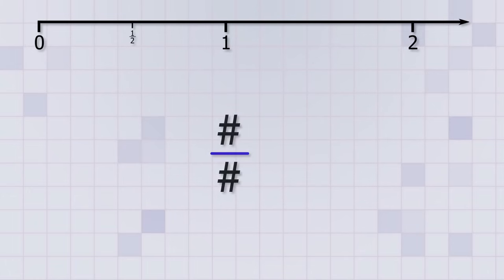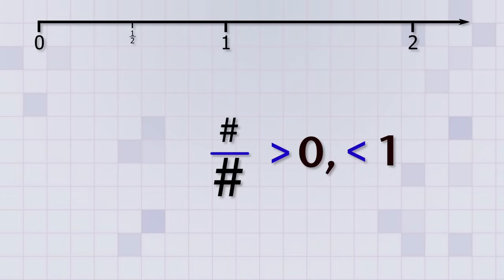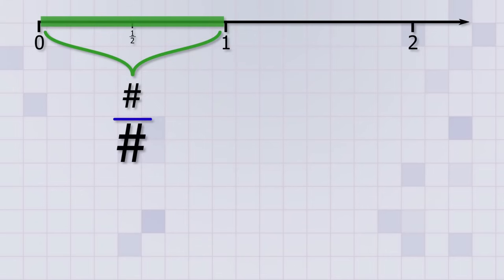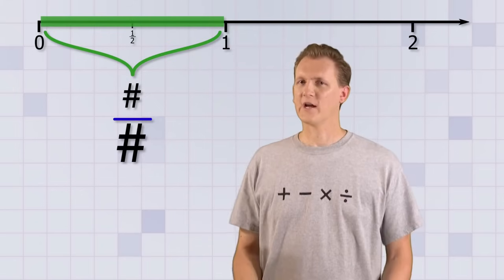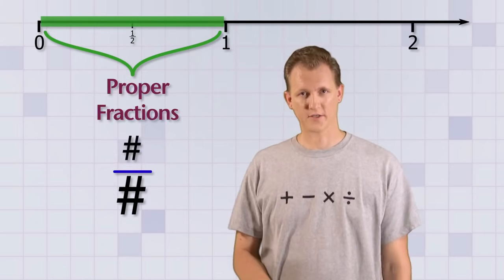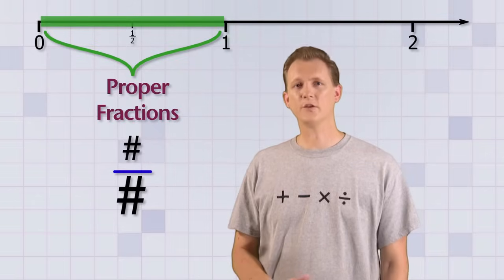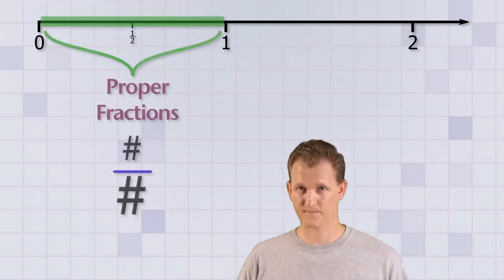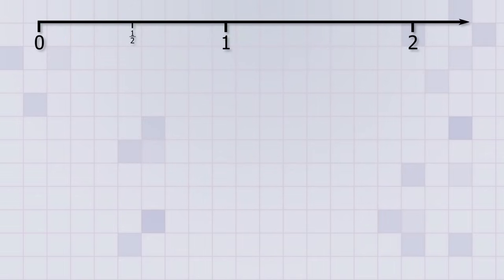The next rule is this: if the bottom number is bigger than the top number, then the value of the fraction will be greater than 0 but less than 1. That means it'll be somewhere in this section of the number line. Any fractions that have values in this range are called proper fractions because we can use these values to represent smaller parts of things.